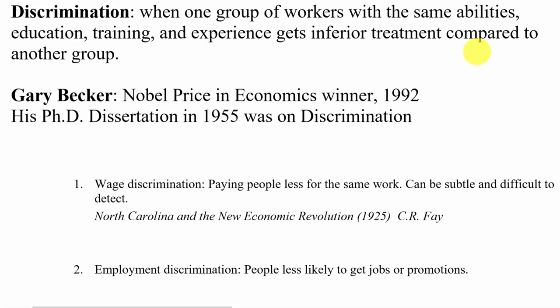Wage discrimination is very difficult to measure — it can be subtle and hard to detect. The approach an economist takes is to look at people working at a company and measure everything possible: years of experience, education, responsibility, work hours — trying to explain every legitimate difference in wages between two people. Anything left over might be discrimination. Most economists agree there is some leftover amount that can't be explained when comparing black and white workers or men and women, and that amount probably reflects some kind of discrimination.